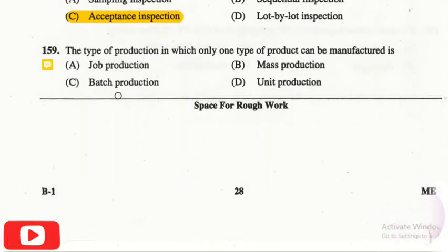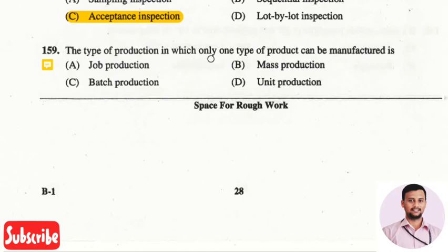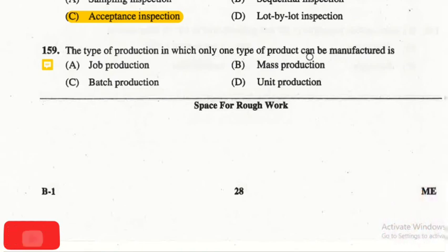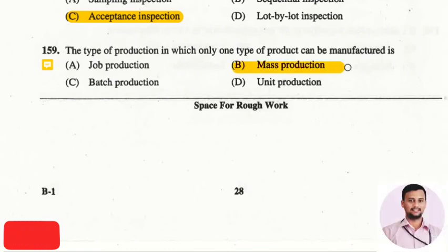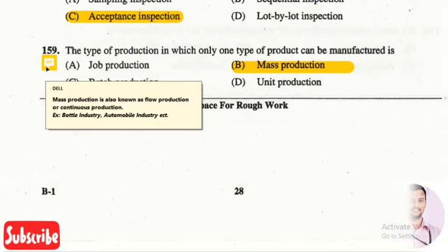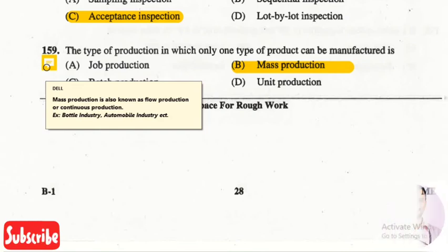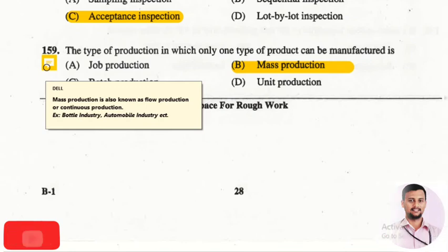The next question is: the type of production in which only one type of product is manufactured is? The right answer is option two, that is mass production. Mass production is also known as flow production or continuous production. Best examples are bottle industries and automobile industries, where the same components are produced in large quantities.